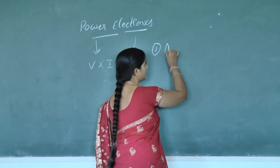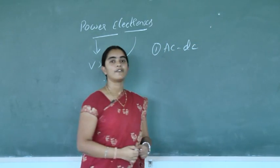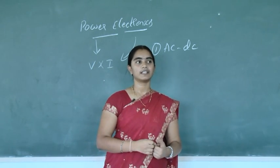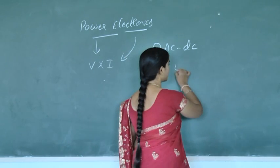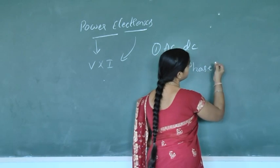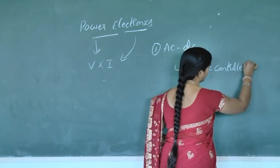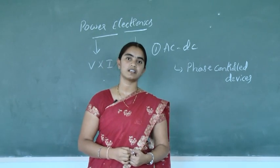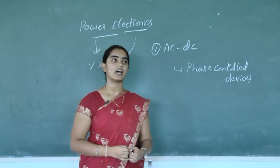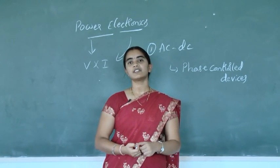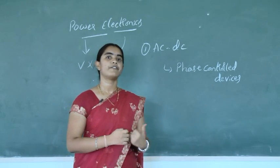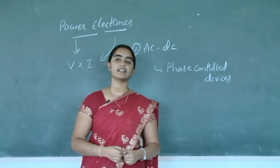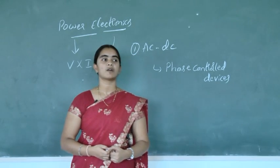The first conversion is AC to DC. The input is fixed AC and the required output is variable DC. For that conversion, we place a power electronic device called phase controlled converters. Phase controlled converters convert fixed AC to variable DC. Applications of phase controlled converters include mobile chargers, controlling of DC excitations, and controlling of DC drives.